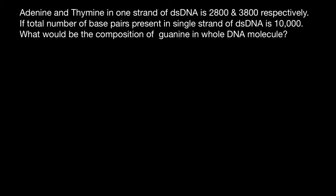Hello and welcome to Nikolai's Genetics Lessons. Today's problem: adenine and thymine in one strand of a double-stranded DNA is 2,800 and 3,800 respectively. If the total number of base pairs present in a single strand of the double-stranded DNA is 10,000, what would be the composition of guanine in the whole DNA molecule?